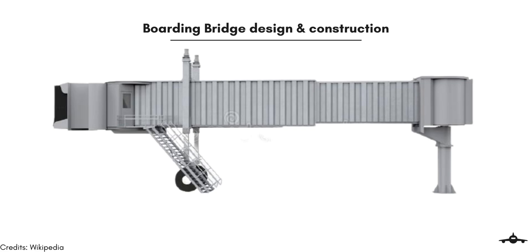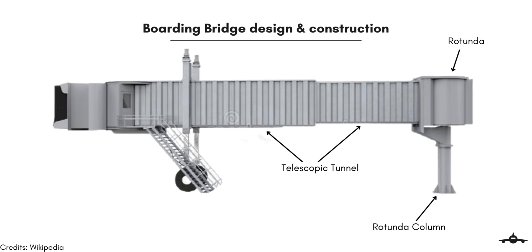Now let us see the components of a passenger boarding bridge. A passenger boarding bridge base is constructed on the rotunda column, which provides a strong foundation for building the mobile structure into the ground. The rotunda is the cylindrical shell that connects to the airport building and serves as the entrance for passengers to the bridge. The telescopic tunnels are what makes it a bridge between the aircraft and the building. The cabin and canopy provide direct contact with the aircraft, and the cabin is where the operator panel is located for the operator to operate the bridge and connect it to the aircraft.